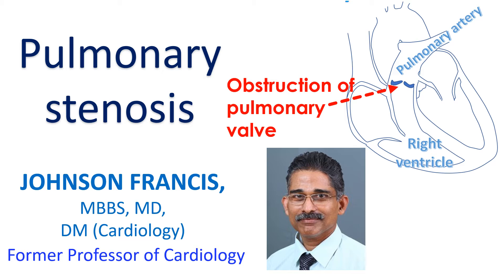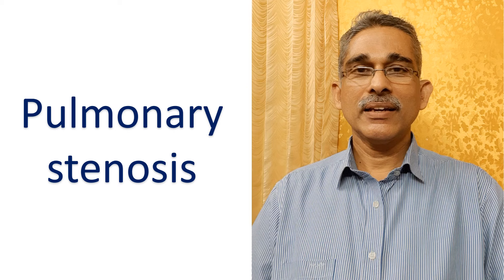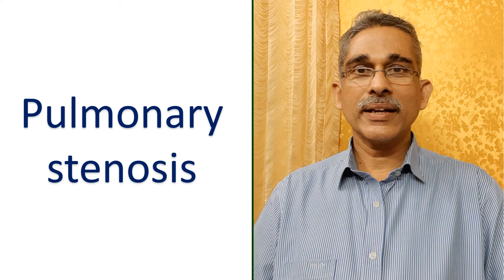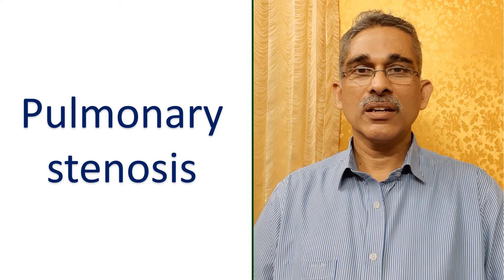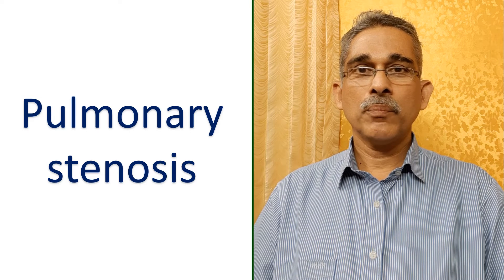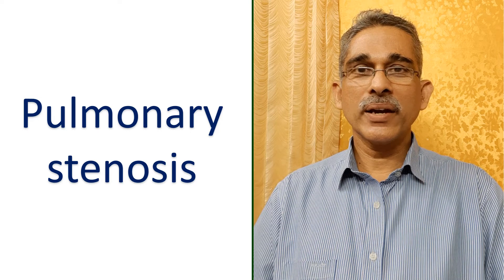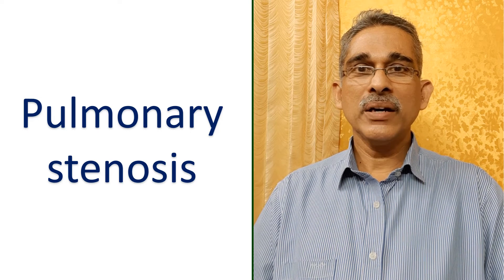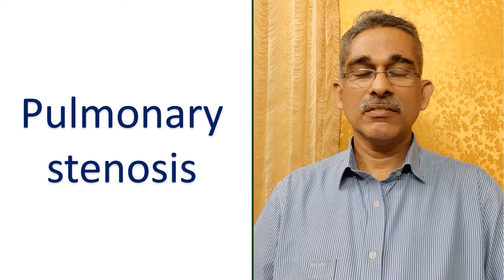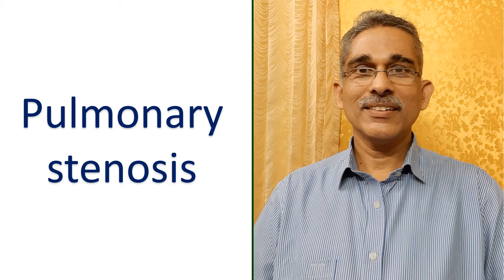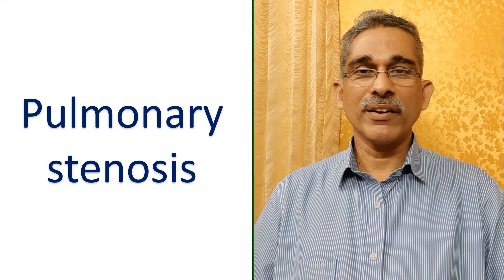Pulmonary stenosis is narrowing of the valve between the right ventricle and pulmonary artery. The pulmonary artery takes blood to the lungs for oxygenation. Pulmonary stenosis is usually a birth defect of the heart. Very rarely, it can be due to a disease known as carcinoid.